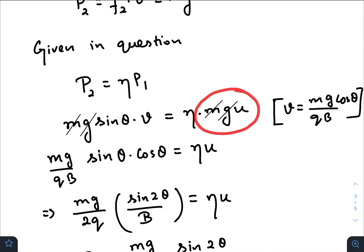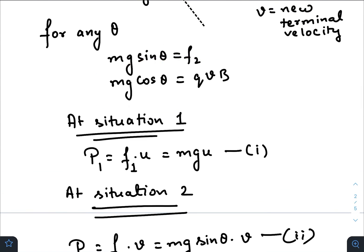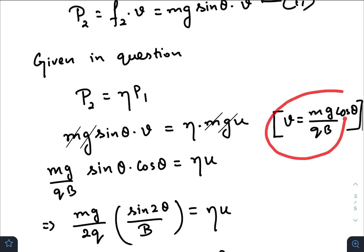So mg just gets cancelled out, we can find out v from this equation. So if we pick up v from this equation we will get something like this and we will just plug this v here.